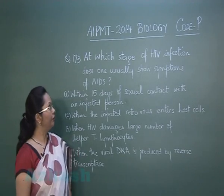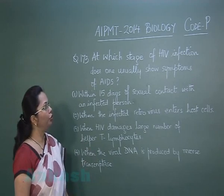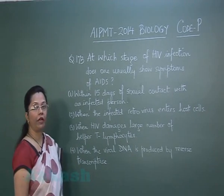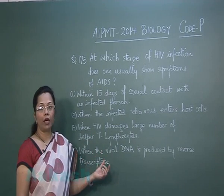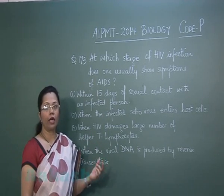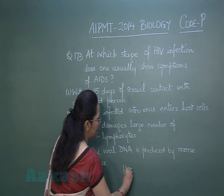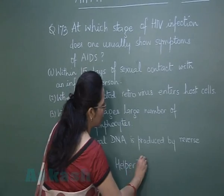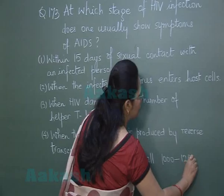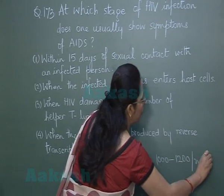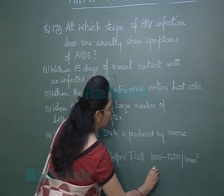Question number 173: at which stage of HIV infection does one usually show symptoms of AIDS? In HIV infection, the virus multiplies in the macrophages and then in the helper T lymphocytes. These helper T cells have a normal count of 1000 to 1200 per millimeter cube of the blood.